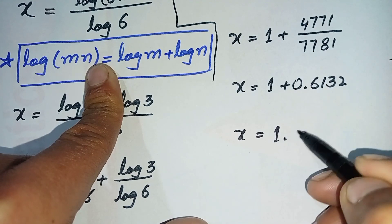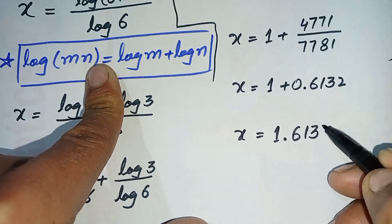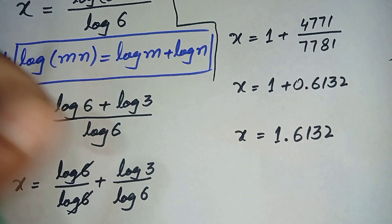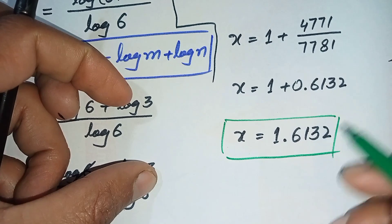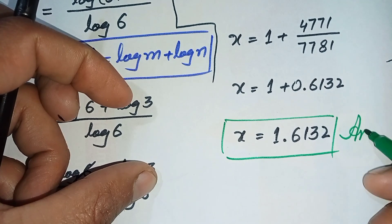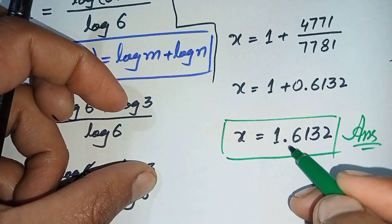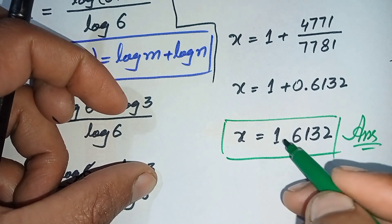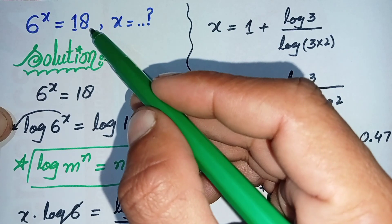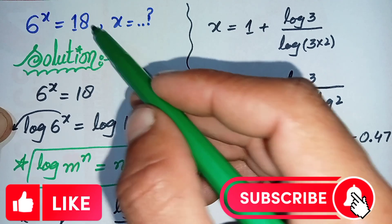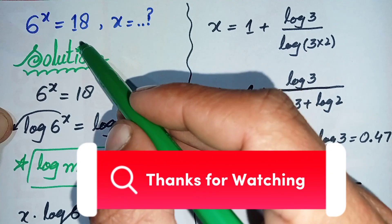Adding the two numbers, x is equal to 1 plus 0.6132, which gives x equal to 1.6132. So finally the value of x is approximately 1.6132 — note this is an approximate value of x. That is the solution of this interesting exponential math problem. Don't forget to subscribe to our YouTube channel for more interesting math videos. Thank you so much for watching, take care, see you in the next video, bye bye.